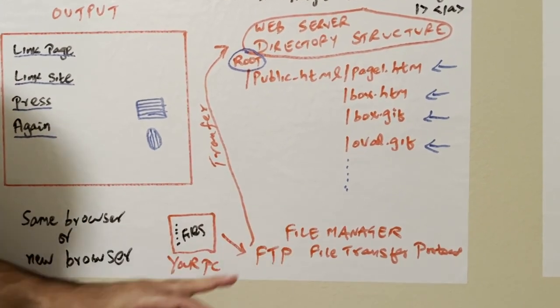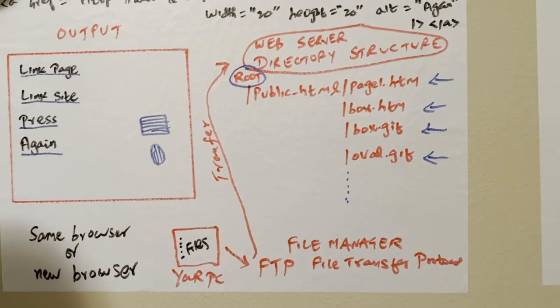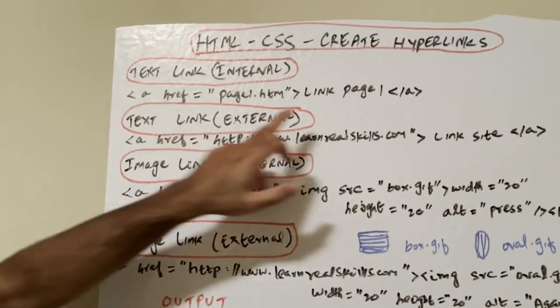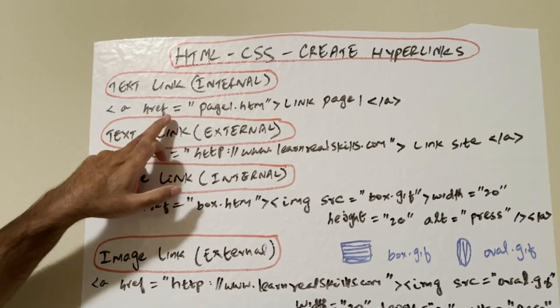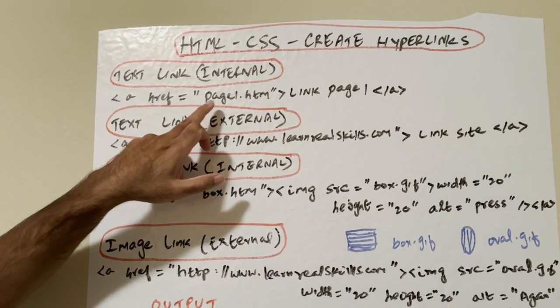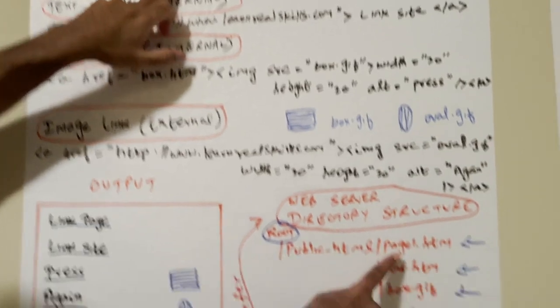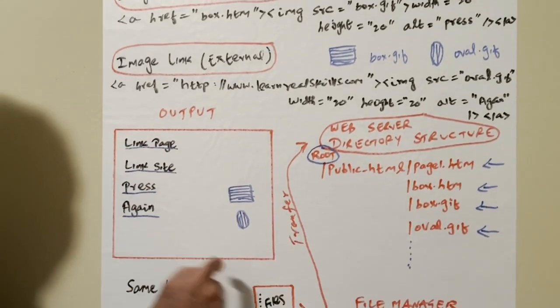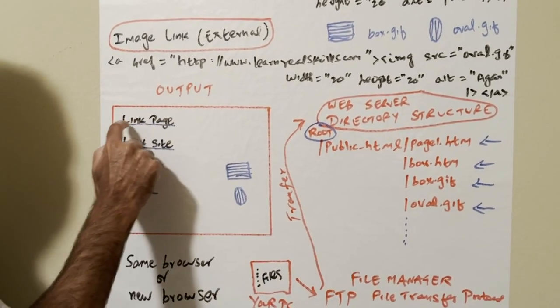Let's continue here with the links. See here is A tag, slash A tag, H reference hyperlink reference equal to page1.htm, and this is the message: link page. In here you can see on the output you'll see a link page, usually a blue color line, meaning it's a link.